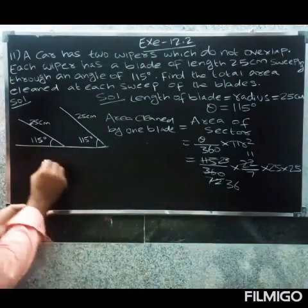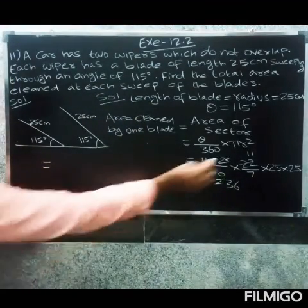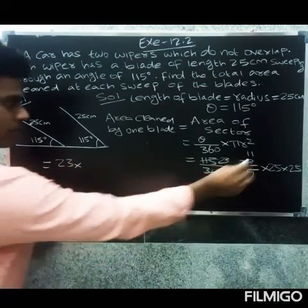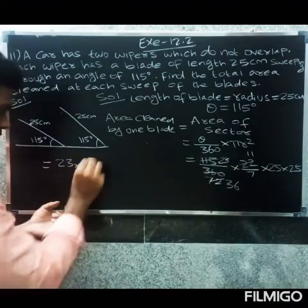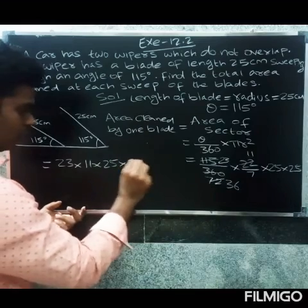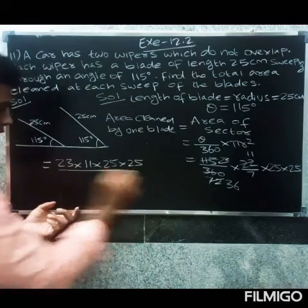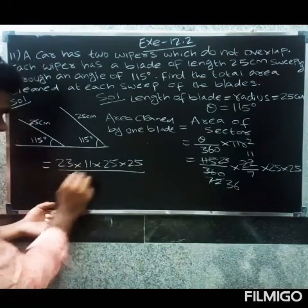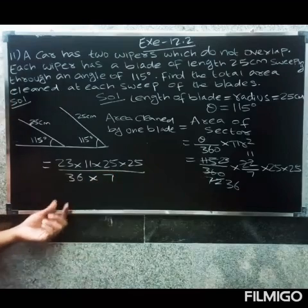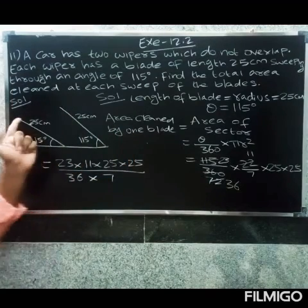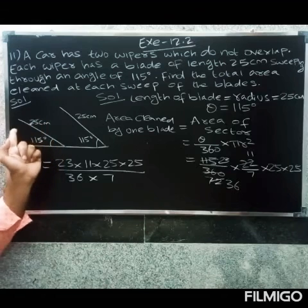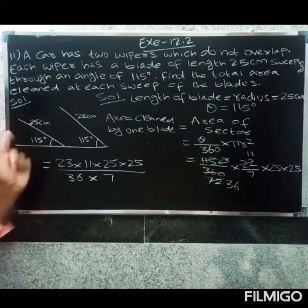So we get 23 into 11 into 25 into 25, divided by 3, and you get 36 and something. And then for the total area for two blades...